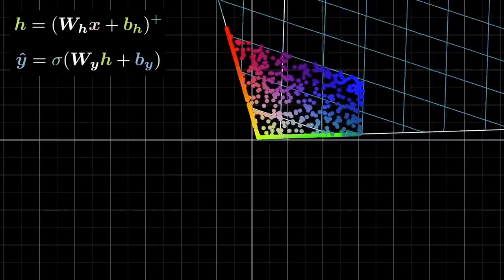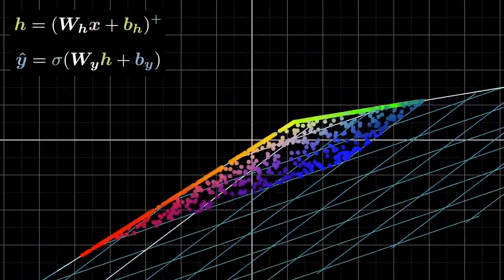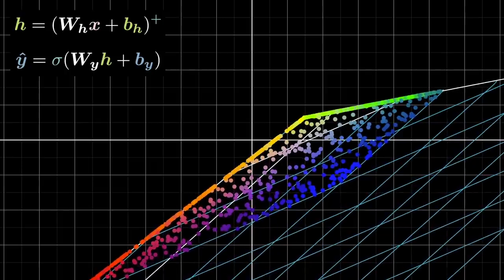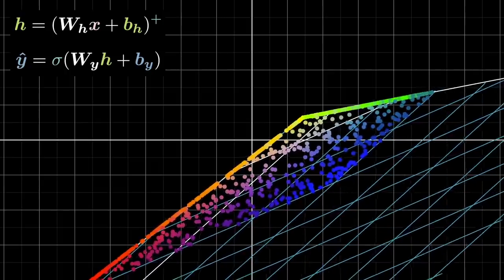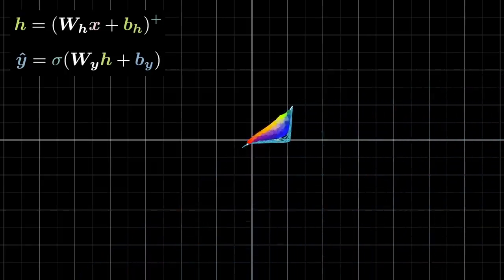After this, we pass it through yet another matrix multiplication or a linear transformation. Then we add the bias. And finally, the sigmoid function squishes everything into the unit square because if you remember, it always outputs a value between 0 and 1.